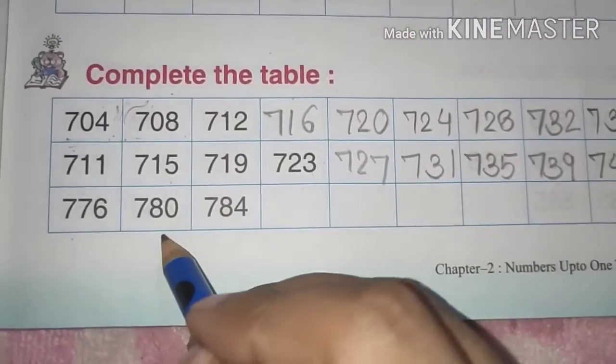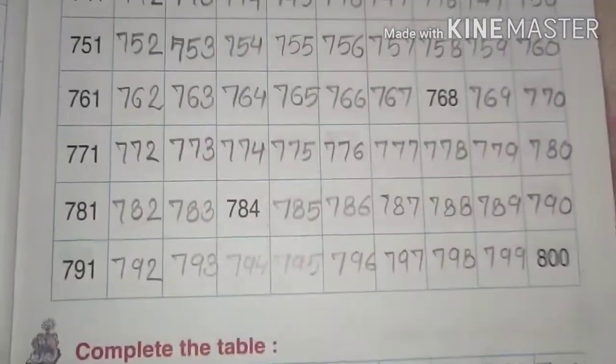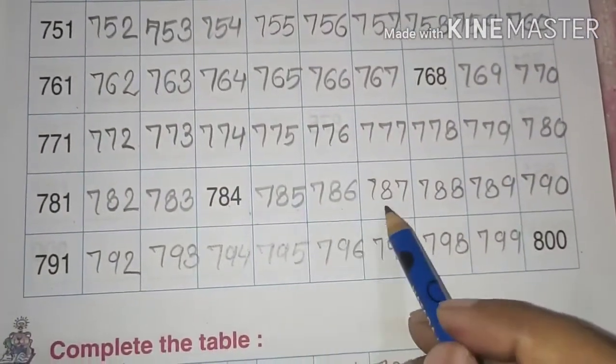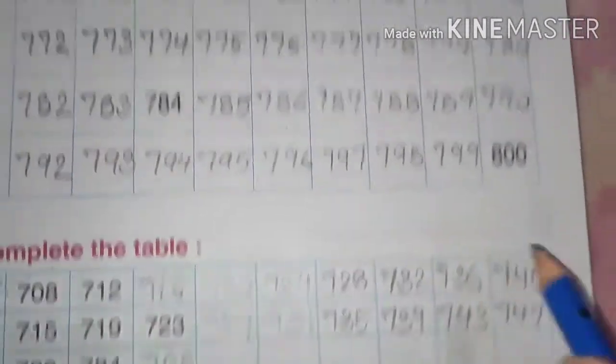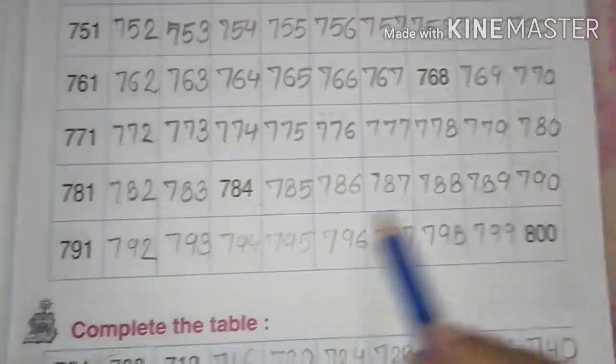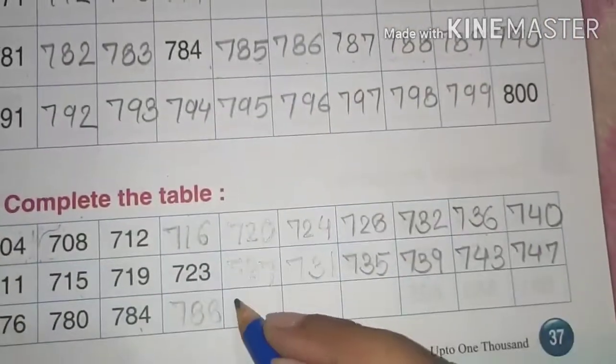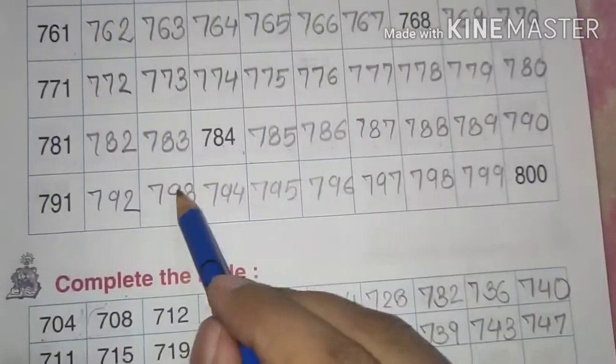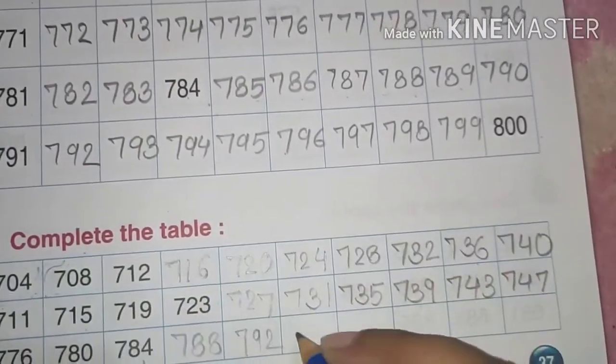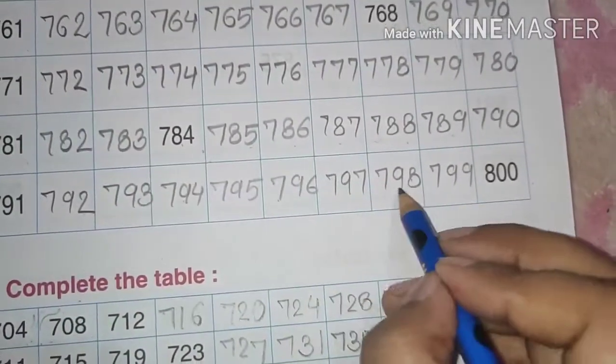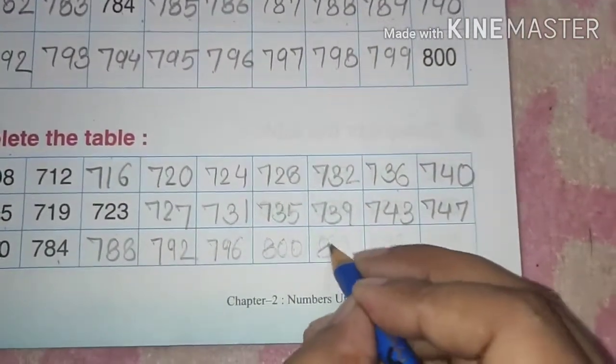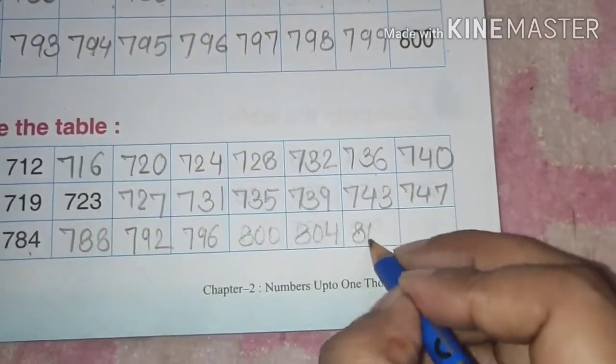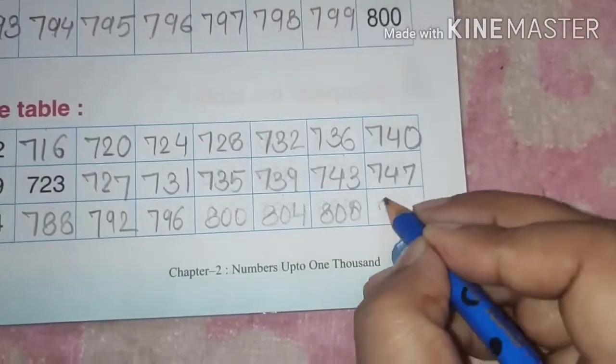Now see. We have 776, 780, 784. So 784 ke baad ni 1, 2, 3, 4. 4th number hai 788. Then 1, 2, 3, 4. 792. 1, 2, 3, 4. 796. Then 1, 2, 3, 4. Now we have 800. 800 me 4 plus kar engi. Toh 804. Then 808. Okay. Then 812.